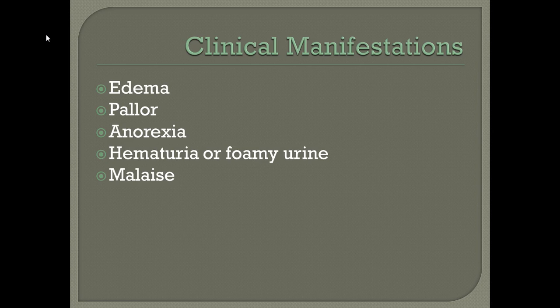Clinical manifestations of nephrotic syndrome include edema with low serum sodium, pallor, anorexia from inability to retain albumin or protein to make new cells, weight loss, hematuria or foamy urine — which indicates protein in the urine — and malaise.